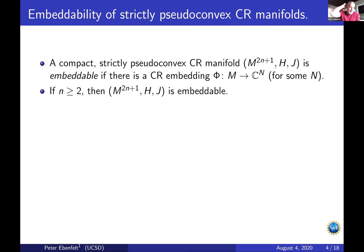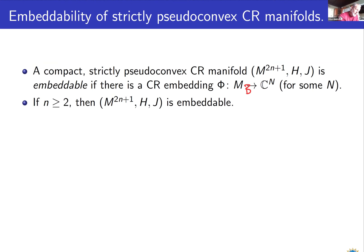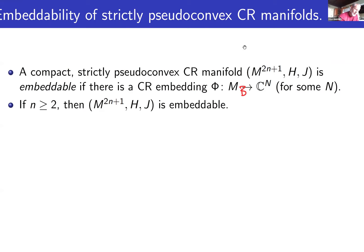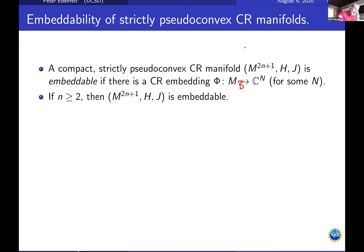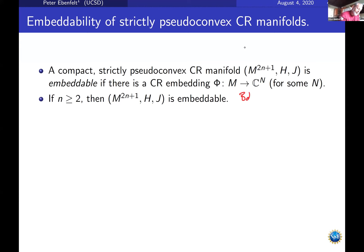It turns out this problem is not so interesting if N is greater than or equal to two, because Boutet de Monvel and Bell proved that compact strictly pseudoconvex CR manifolds are always embeddable if the dimension of M is five or higher.